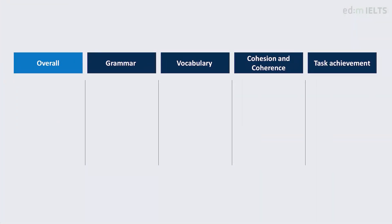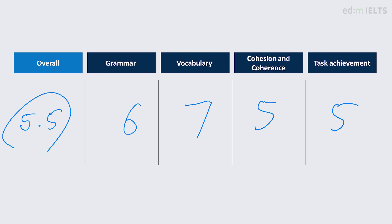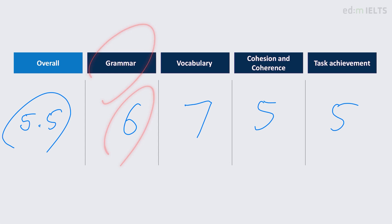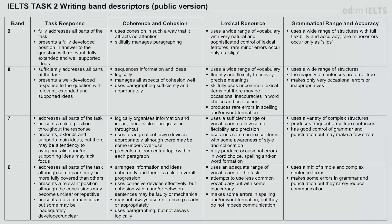So it was actually quite hard to score. What I came up with was an overall 5.5 — the average of six, seven, five, and five — because it would be rounded down, not rounded up. So let's start with grammar, which I gave a six. Seven for grammar uses a variety of complex sentences and frequent error-free sentences with good control of grammar and punctuation. But if you're not writing in full sentences — like here with the numbered list — I think that's a big problem.